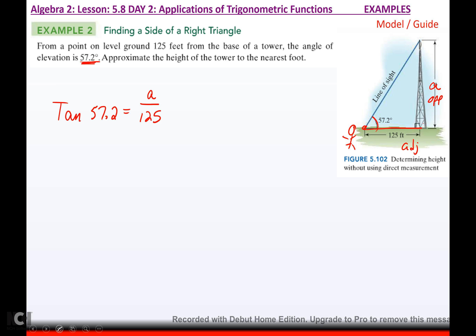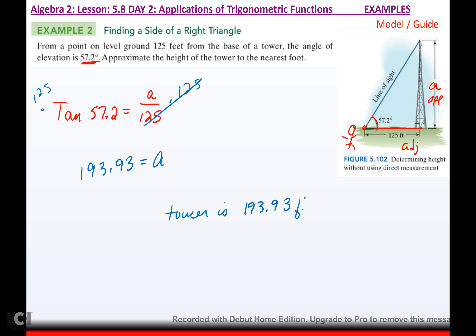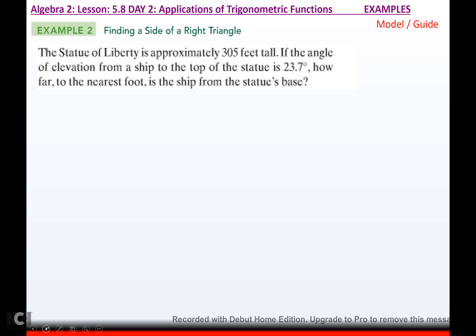Make sure your calculator is in degree mode or you will get the wrong answers. To solve for a, multiply both sides by 125. If you type that in, you get 193.96. So the height of the tower is approximately 193.96 feet tall.